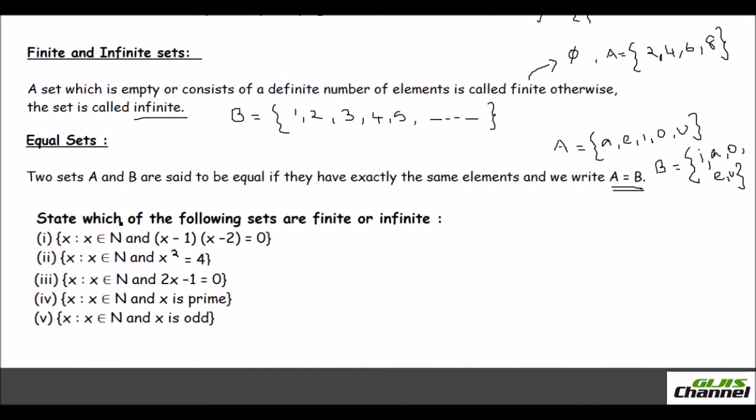Here I have given you a short question where you can segregate the numbers as finite set or infinite. First question says x is a natural number and x minus 1 times x minus 2 equals 0. This is in set builder form. So first let us find out what is x. Equate these two to 0. So x minus 1 equals 0, so x will be positive 1. Likewise x minus 2 equals 0, so x should be 2 also. So the elements you have is 1 and 2. You know for sure that you have only two elements here. So this one is a finite set.